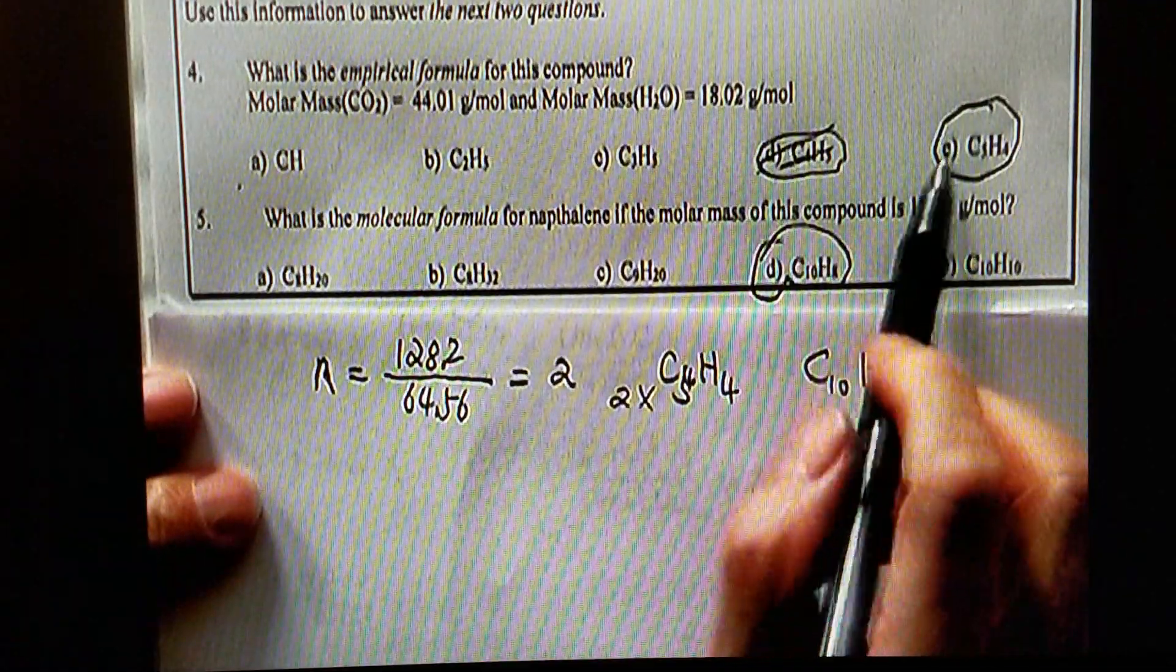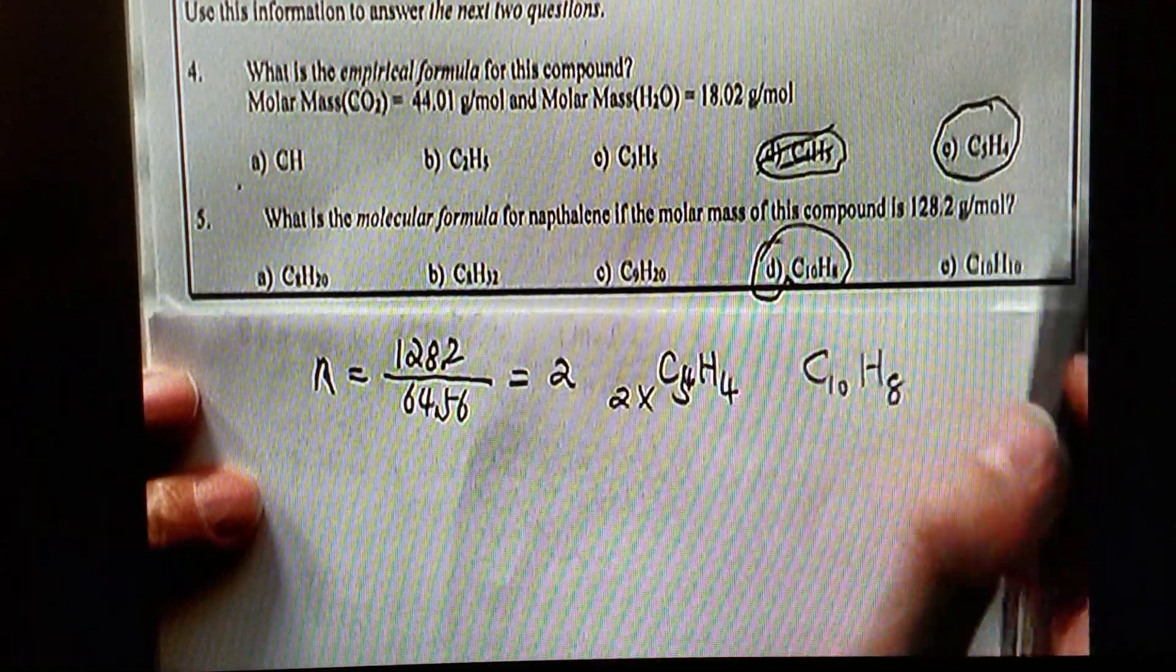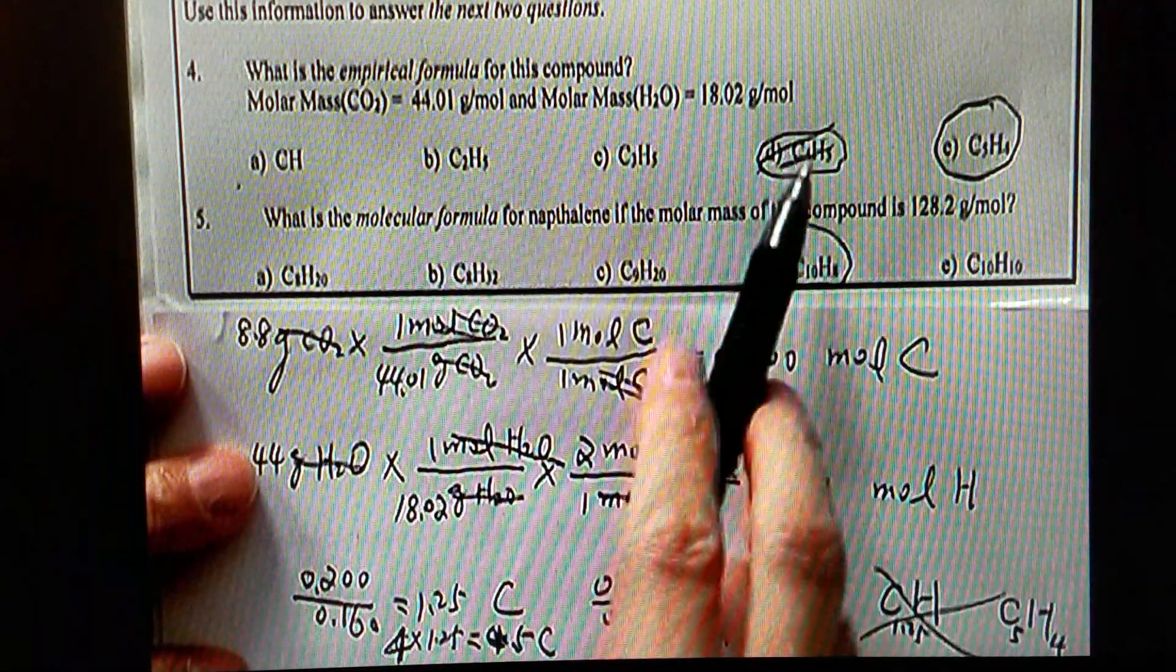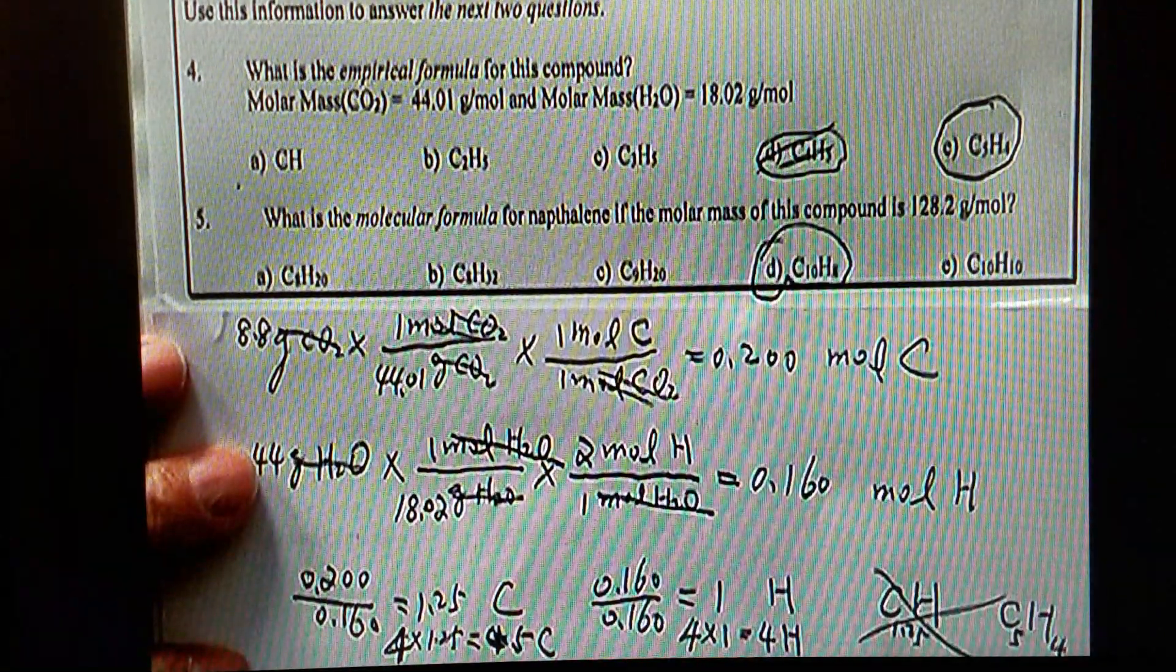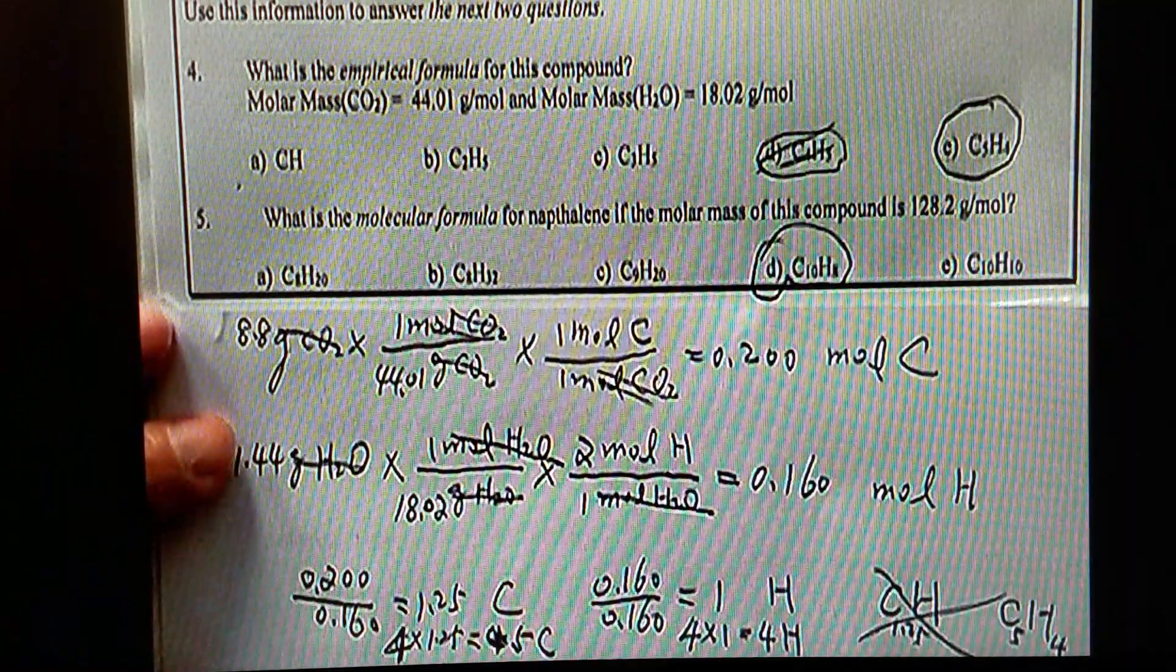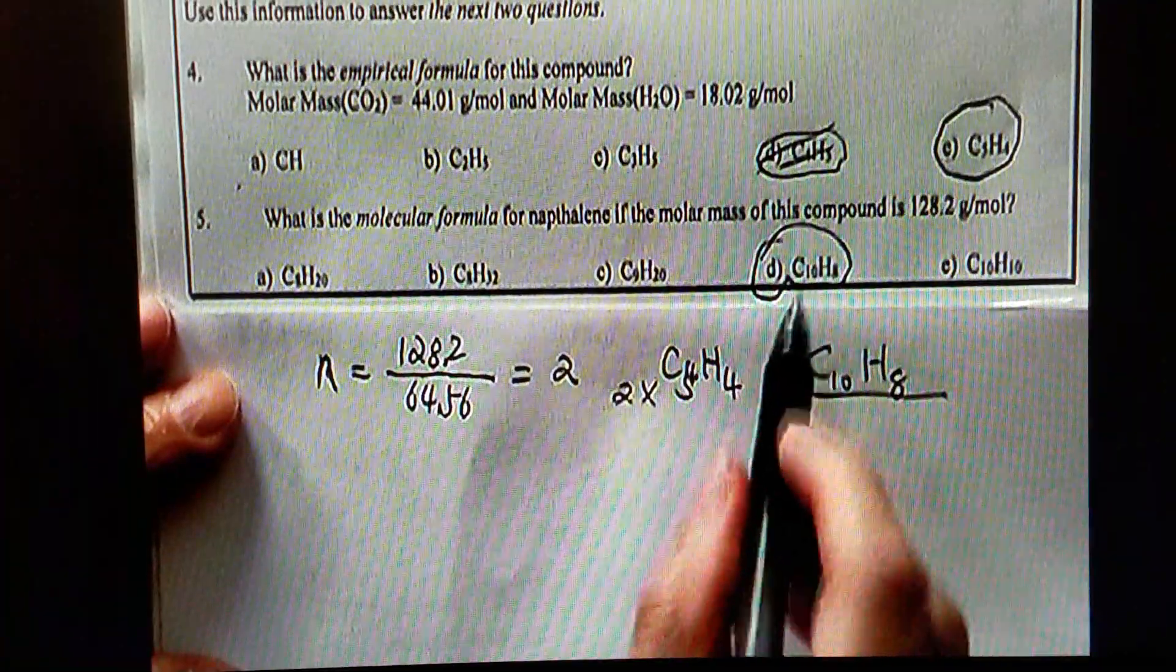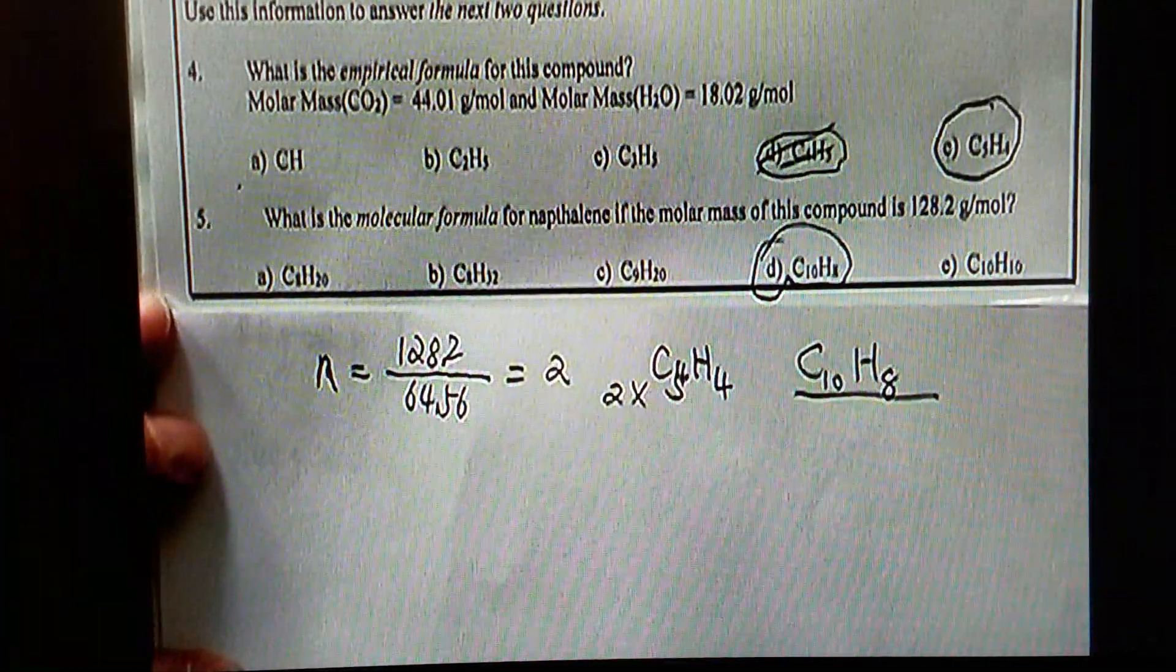So, for question number 4, that should be E, C5H4. Because here you see, we have 5 carbon. I just marked another one. That's for question number 4, and this one is for question number 5. That's the molecular formula.